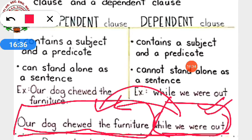Now understood correctly the meaning of independent and dependent clause. Independent clause can stand alone; both have subject and predicate. The only difference is: in a simple sentence we have one subject and one predicate; in a compound sentence we have subject and predicate in both parts, but both are independent clauses joined with a conjunction; and in a complex sentence we also have subject and predicate, but one part is the independent clause and the other part is the dependent clause.